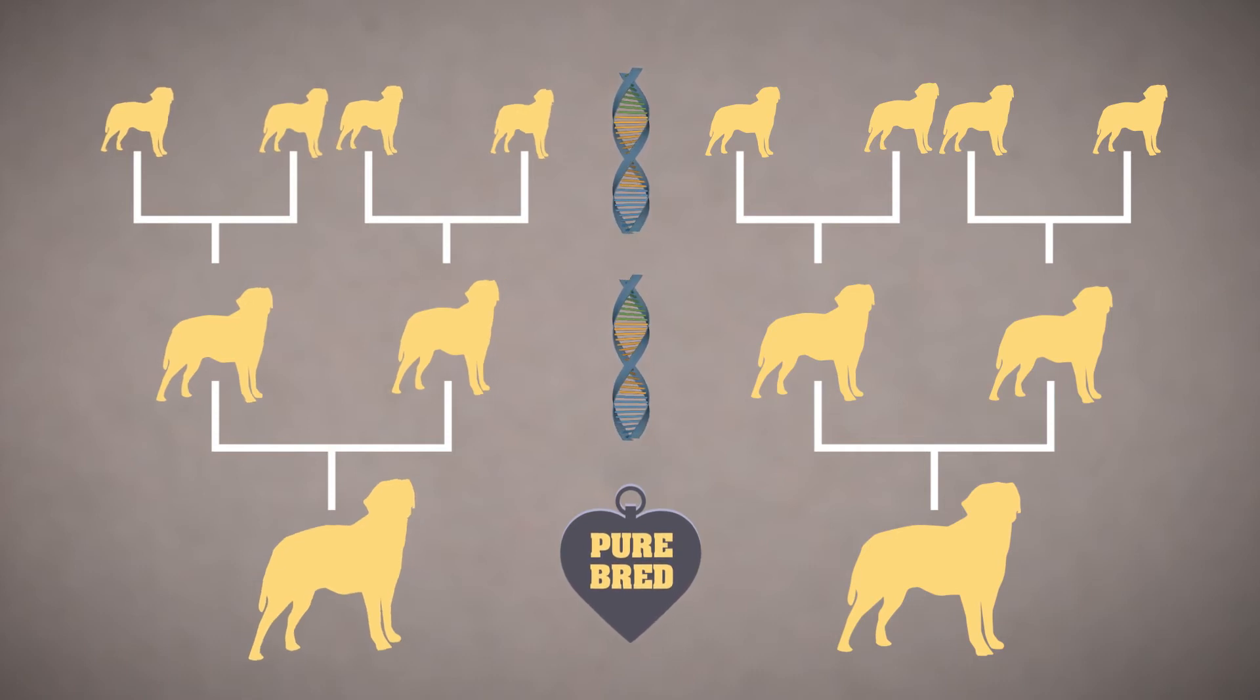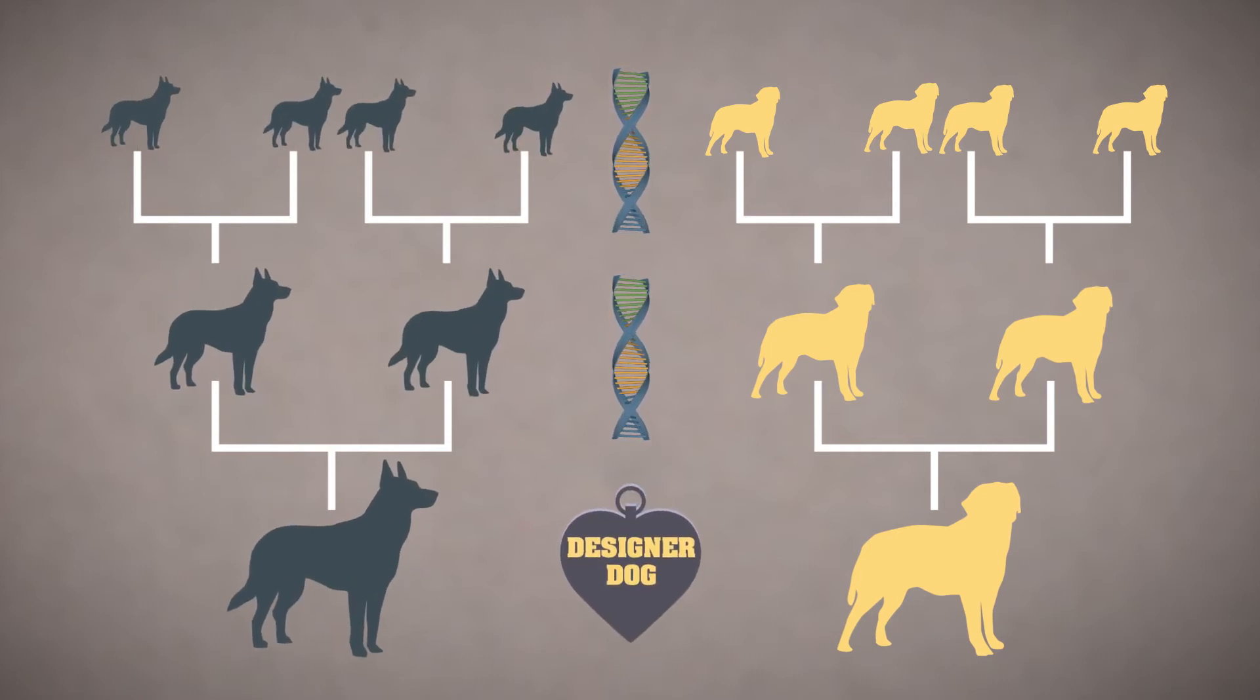The second tree considered has two different purebreds at the parent level, also known as a first-generation cross, or designer dog.